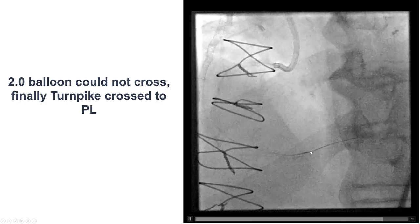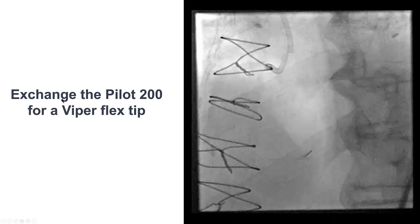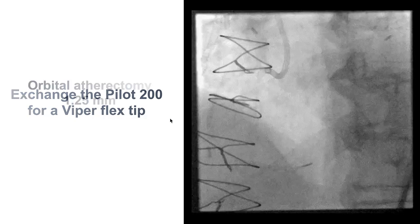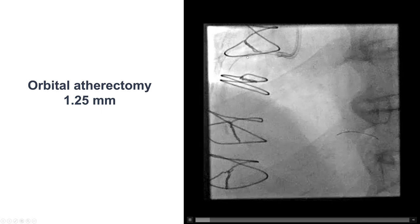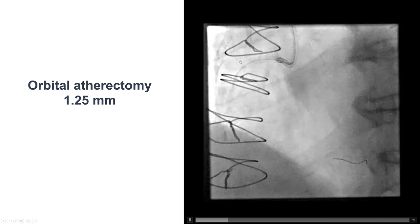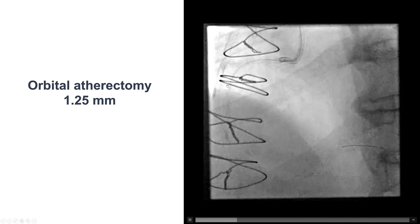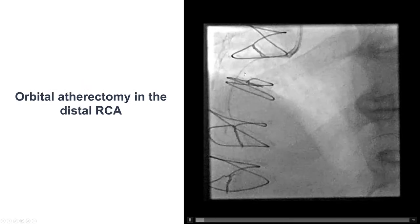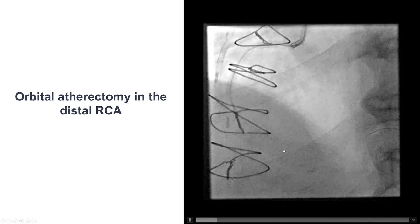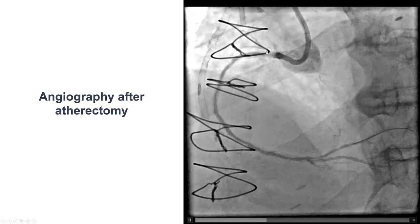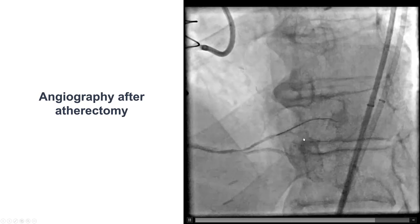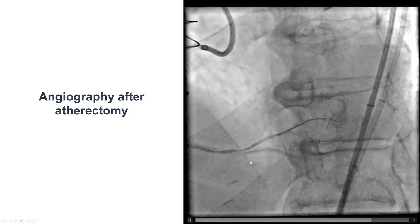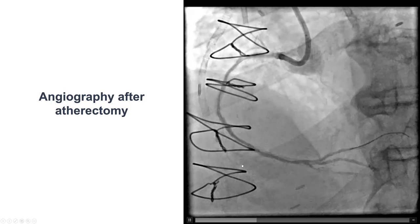We decided to perform atherectomy and changed the Pilot wire for a ViperFlex tip to do orbital atherectomy. We did multiple runs of orbital atherectomy throughout the right coronary artery, all the way from the proximal to the distal. We then had some restoration of antegrade flow all the way to the posterolateral.